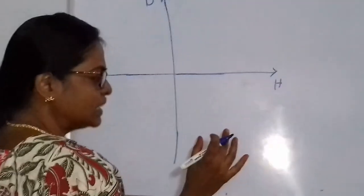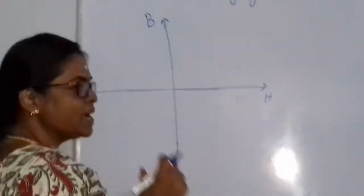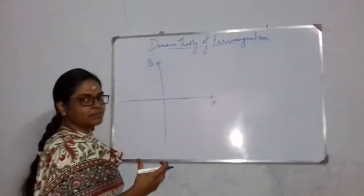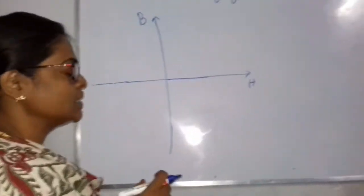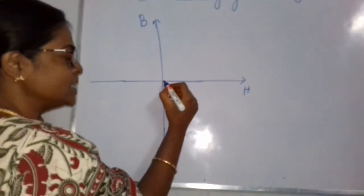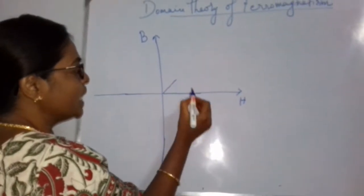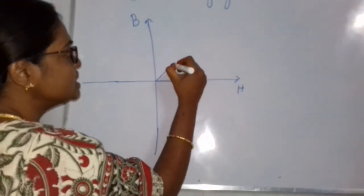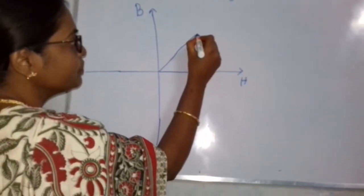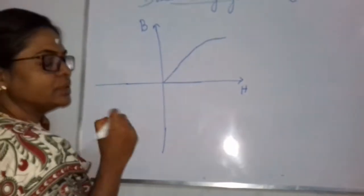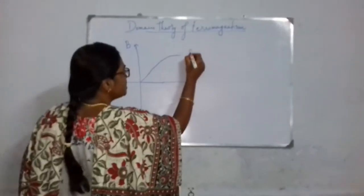When we plot the relationship between the externally applied field H and the magnetic induction B, it will not be linear. Initially when H increases, B increases linearly. But as H continues to increase, B becomes non-linear — there is a saturation. It reaches a saturation value, and this is called saturation magnetization.